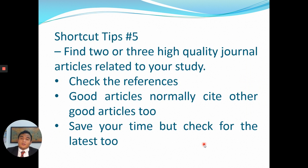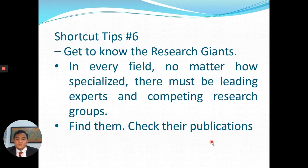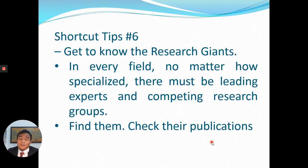Shortcut tip number five: find two or three high-quality journal articles related to your study, then check their references. Good articles normally cite other good articles, which saves your time — but check for the latest references. Shortcut tip number six: get to know the research giants. In every research field there must be leading experts and competing research groups specialized in that area. Find them and check their publications — they publish a lot, and some will have contradicting or interesting data where one paper tops up another, which is good for your discussion.